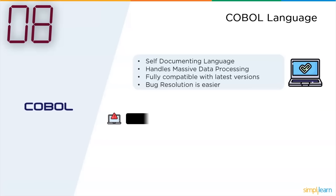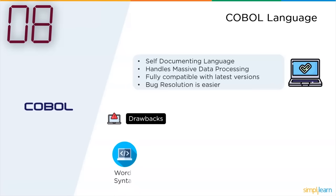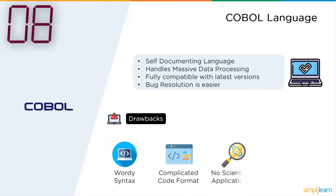The drawbacks which made COBOL fade away: it had a wordy syntax, it is really complicated to format the code, it had no scientific applications other than business applications, and it is very slow in compilation. Despite these drawbacks, COBOL still had some decent demand in the IT industry.